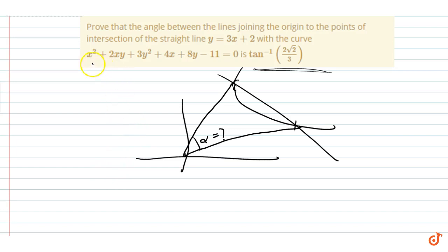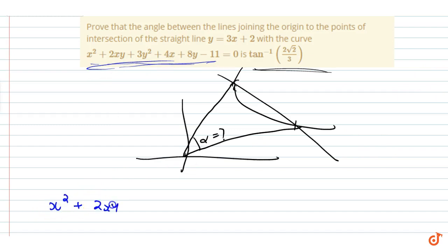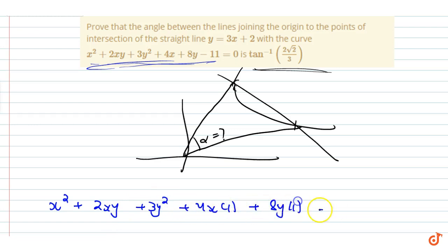We have a straight line equation where all degrees are the same. That means: x² + 2xy + 3y² + 4x·(1) + 8y·(1) − 11·(1²) = 0. Right? Now look here.